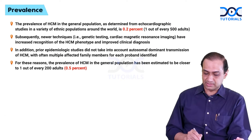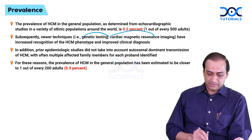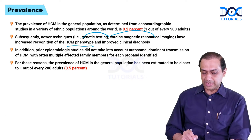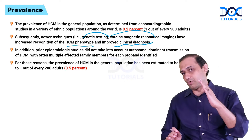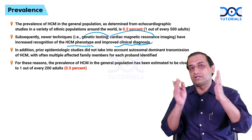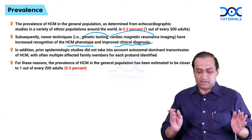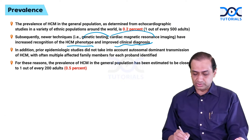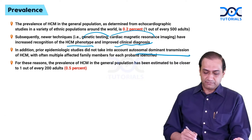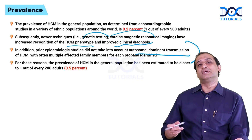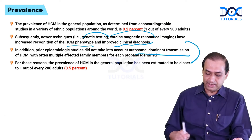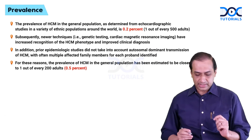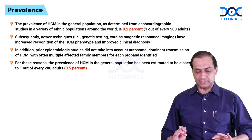Newer modalities like genetic testing and cardiovascular MRI have increased recognition of the phenotype and improved clinical diagnosis, beyond pure clinical auscultatory or echocardiographic diagnosis. Also, prior studies did not account for the autosomal dominant transmission, which often results in multiple family members being affected, and hence the prevalence goes up — the current prevalence is now estimated at 0.5% rather than 0.2%.